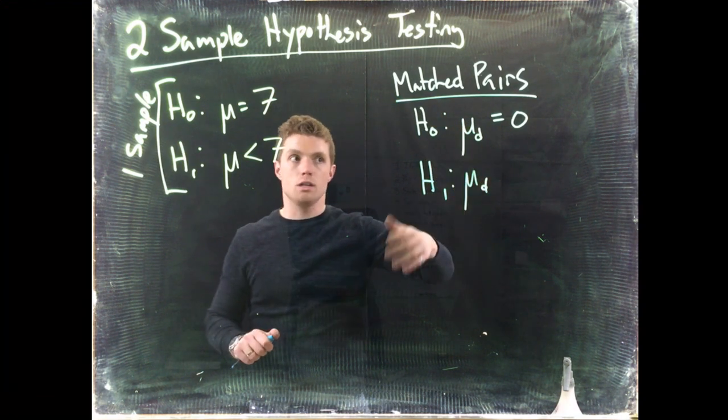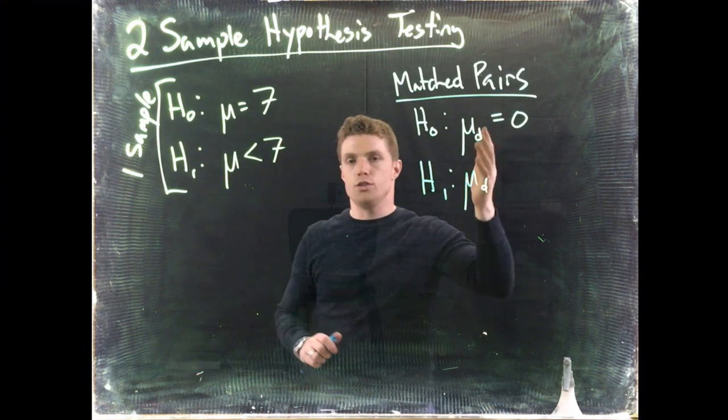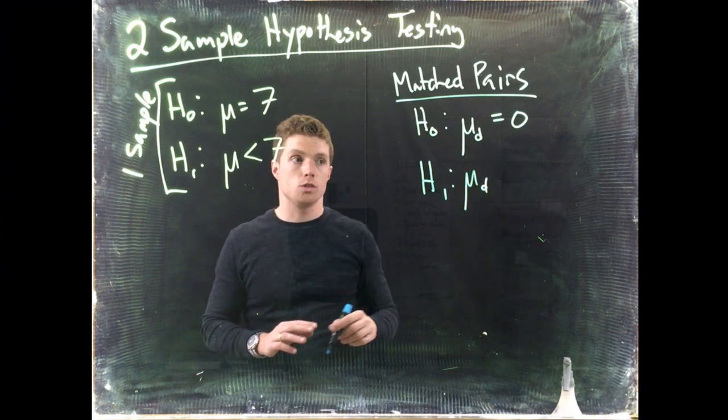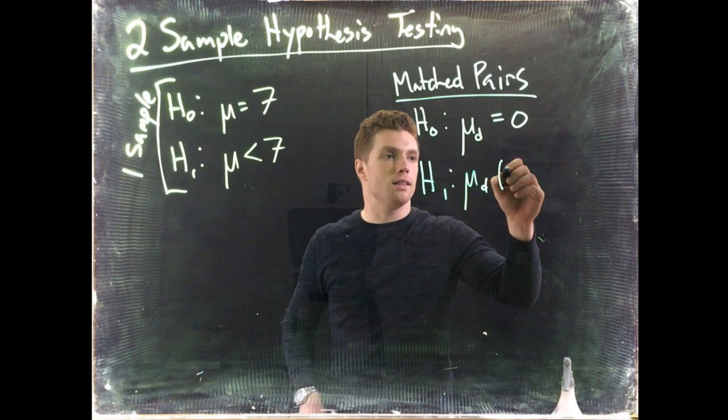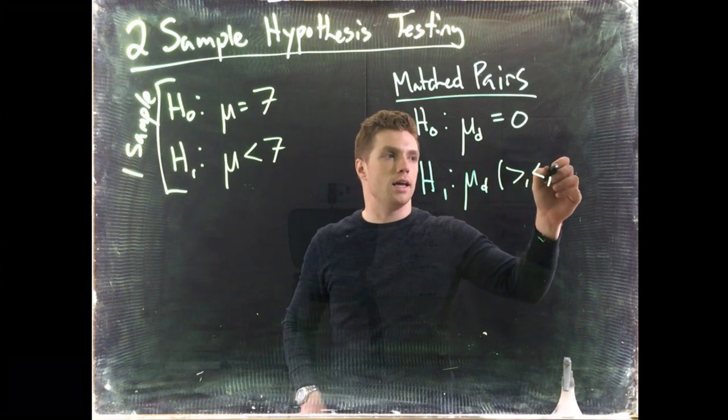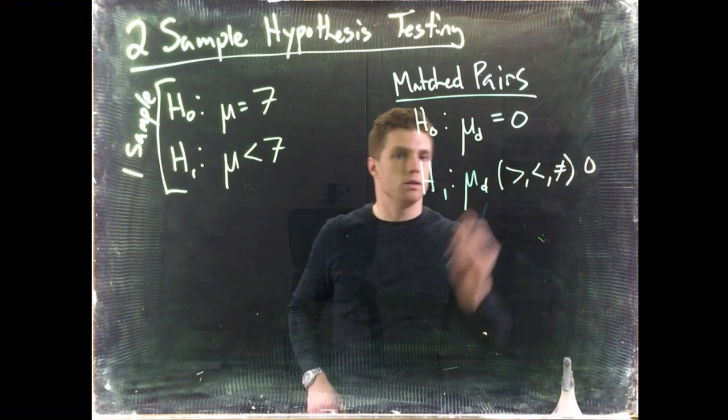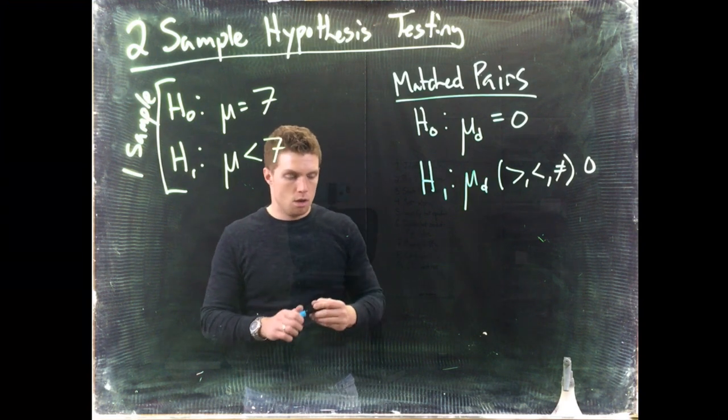That's why we're looking at the mean of the differences. Baseline assumption, at least for right now, is that it is equal to zero. There's no difference between the two groups. And then we can go and say that it's either greater than, less than, or not equal to zero. And that's how we'd handle matched pairs.